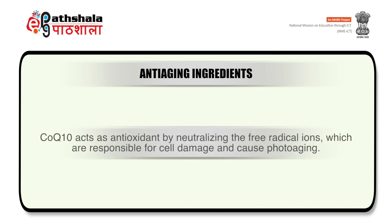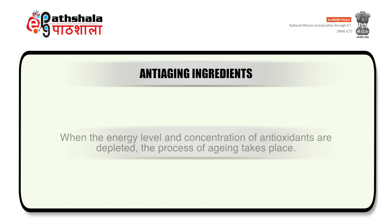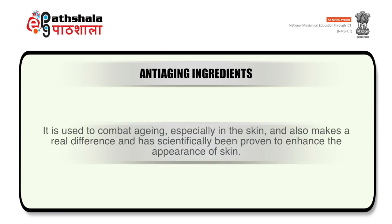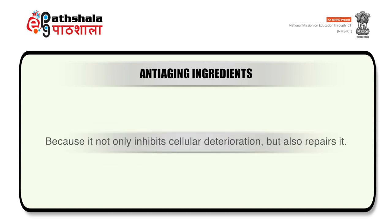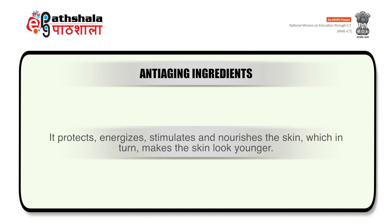The next type of anti-aging ingredient is coenzyme Q10. It acts as an antioxidant by neutralizing free radical signs, which are responsible for cell damage and cause photoaging. It supports energy levels and is used as an energy booster. When energy levels and concentration of antioxidants are depleted, the process of aging takes place. It is used to combat aging especially in the skin, and has scientifically been proven to enhance the appearance of the skin. It not only inhibits cellular deterioration but also repairs it, as it is already present in the skin as part of the body's cellular structure. It will not cause any toxic or harmful effect on the skin when applied topically, and protects, energizes, stimulates, and nourishes the skin, making it look younger.